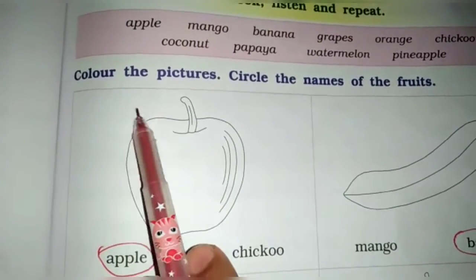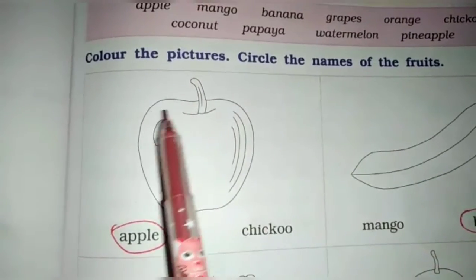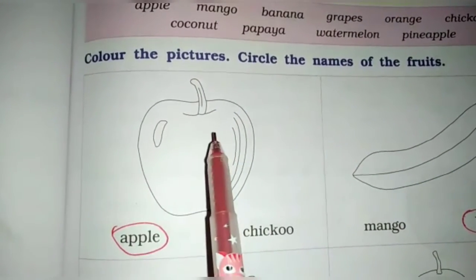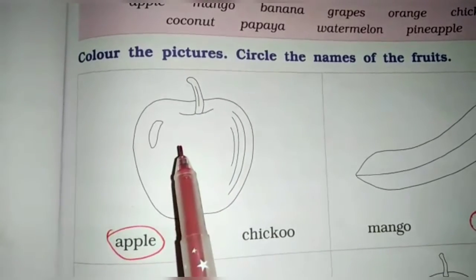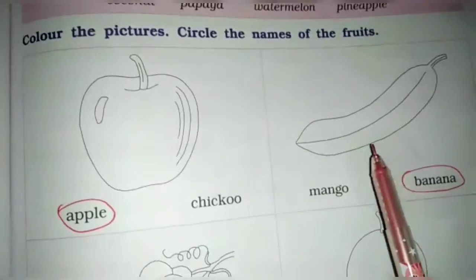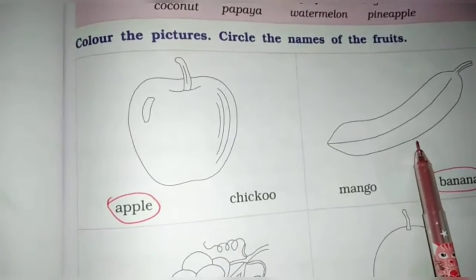Now exercise. Color the pictures. Circle the names of the fruits. So first one. Color. What is this? This is an apple. So color is red. This is banana. So color in yellow. Clear?